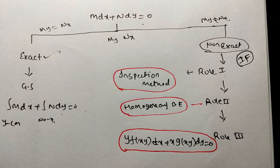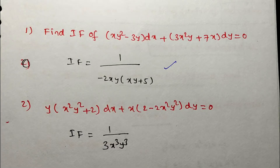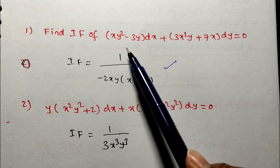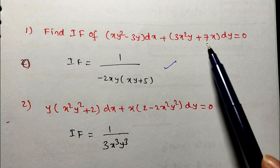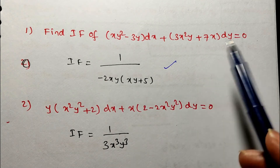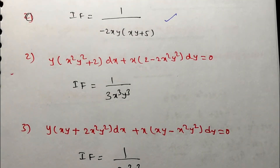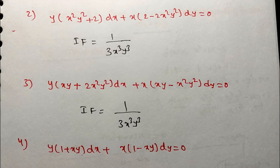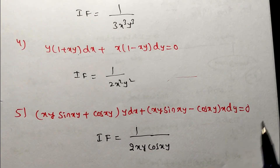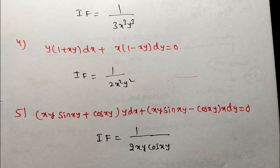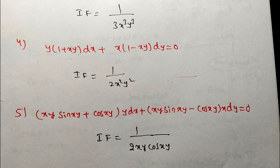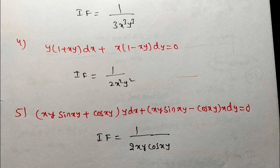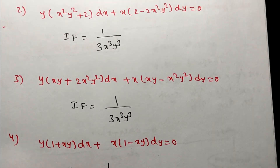I will solve a few problems finding only the integrating factor and give you a task. The first problem is: find the integrating factor of (x² - 3y) dx + (3x²y + 7x) dy = 0. There is a second and third problem as well — please take a screenshot. These types of problems also appear in the GATE exam, sometimes asking to find the integrating factor or identify the solution.